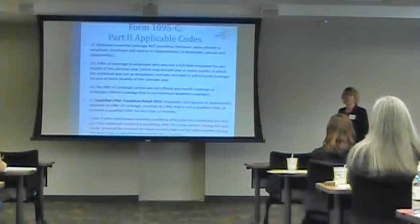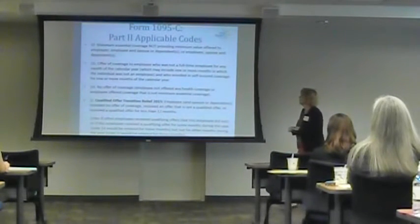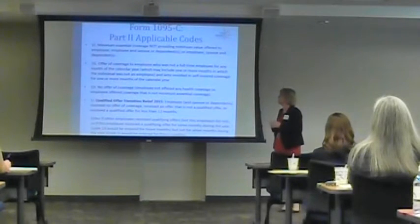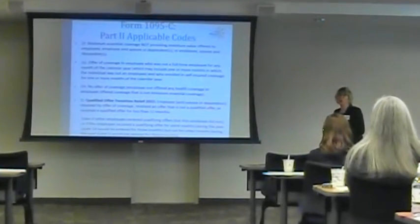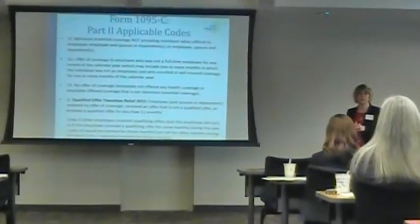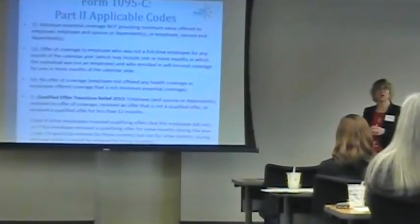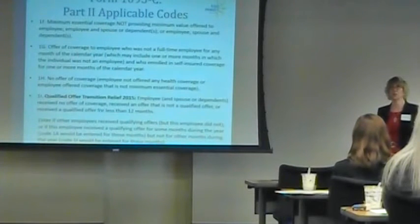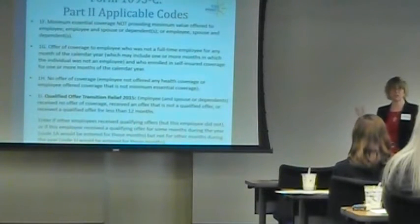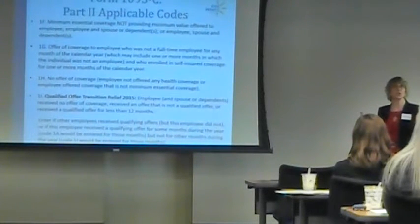1H means no offer of coverage. These will primarily be people who aren't on the plan — it might be because they weren't your employee yet. Since it's a calendar year form, maybe you didn't hire somebody until June. The form still has to be filled out with something in those boxes or it triggers an alert to the IRS. 1H is also used when you have COBRA participants — you offered them coverage and you've got to give them a form, but they're not your employees.